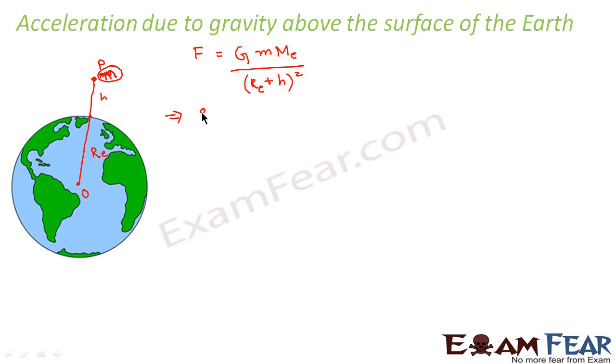So we can say what would be the value of g? Now again here we are calculating g of h, that means the value of g at a height h above the surface of the Earth. So g will be equal to F by m, that means this will be equal to G M_e divided by (r_e + h) whole square.